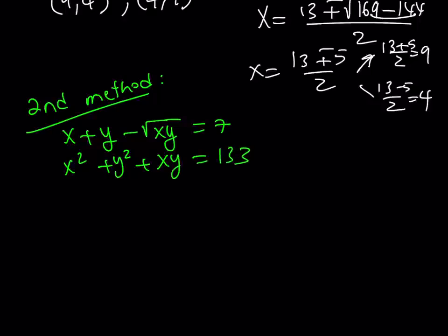Then I got x squared plus y squared plus xy is equal to 133. Now, here's how the second method works. First of all, if you knew that 133 is a multiple of 7, that would be kind of helpful because 7 times 19 is 133. You may or may not know this, but that's okay.